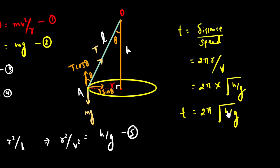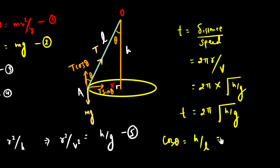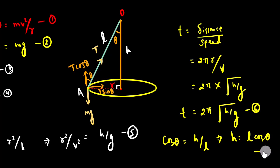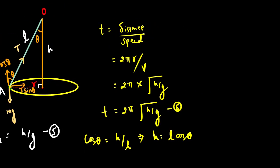T equals 2π times the square root of L over g for a simple pendulum, where L is the length of the string. Here, in the conical pendulum setup, h equals L cos theta, where h is the vertical height and L is the string length. Substituting, T equals 2π times the square root of L cos theta over g.